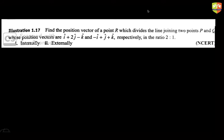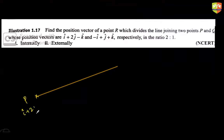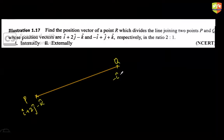Let's move on to the next concept — a simple question based on the section formula. So let me discuss it: we divide the points P and Q. P has position vector i + 2j - k and Q has position vector -i + j.